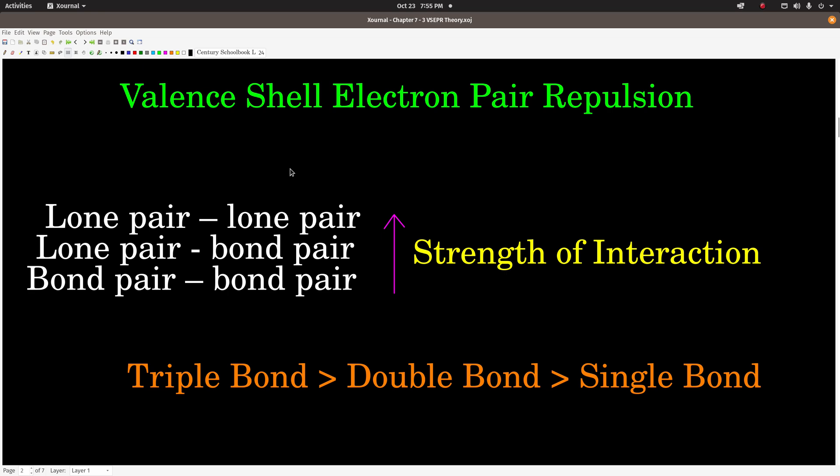An electron group is either a bond or lone pair of electrons. Remember that lone pair–lone pair interactions are stronger, push away more strongly than lone pair–bond pair interactions do.